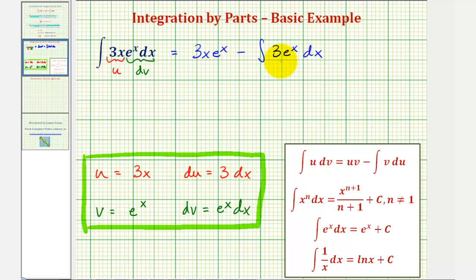Notice how this integral here is much easier to integrate, because we don't have this extra factor of x in the integrand. The integral of three e to the x with respect to x is just three e to the x. So the anti-derivative is three x e to the x minus three e to the x plus c. Which means the derivative of this family of functions will be three x e to the x.